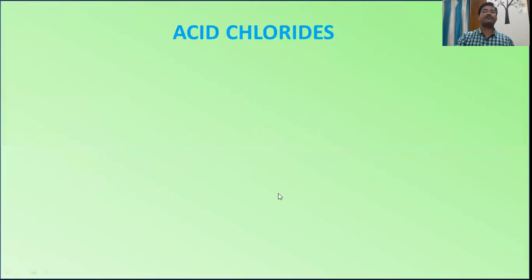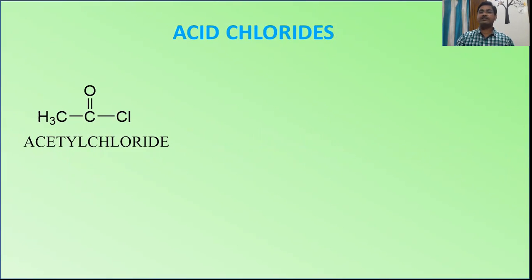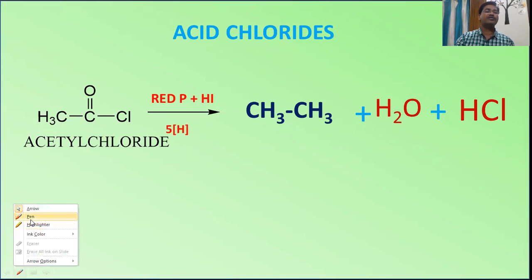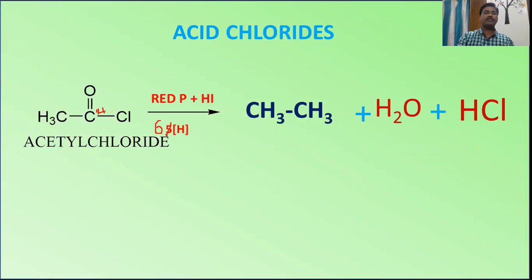For acid chlorides — acetyl chloride, whose IUPAC name is ethanoyl chloride — when treated with red phosphorus and hydrogen iodide, it gives ethane, and the oxygen becomes water while HCl is also formed. The carbon takes three hydrogens, two hydrogens go to oxygen, and one hydrogen is taken by chlorine — therefore six hydrogens are required.